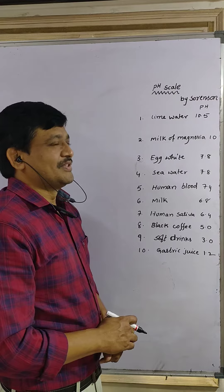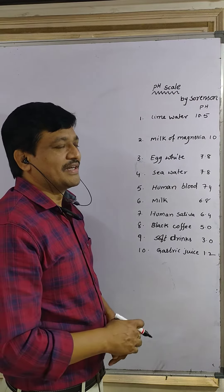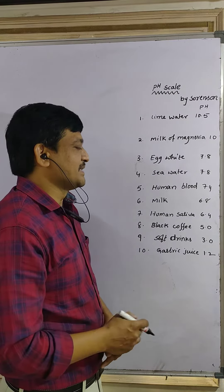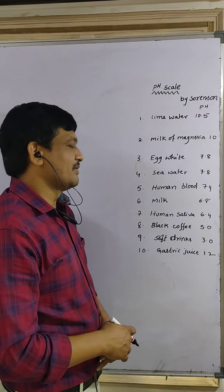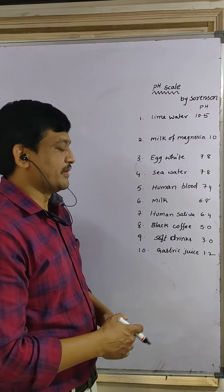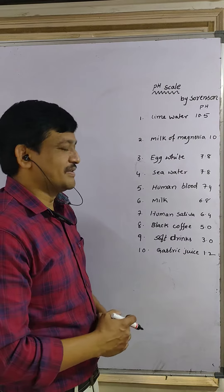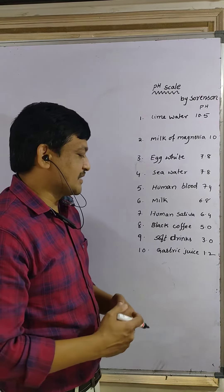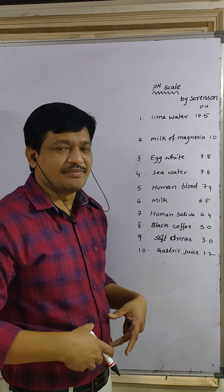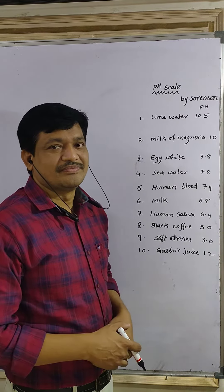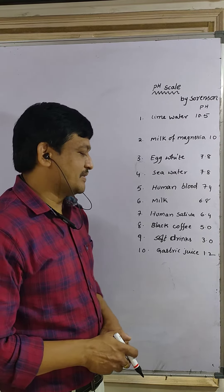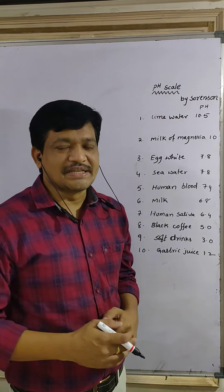Next, milk has a pH of 6.8 — milk contains lactic acid, that is why it is acidic, below 7. Human saliva is 6.4, also acidic in nature. Black coffee is approximately 5.0, soft drinks are 3.0, and gastric juice — which contains HCl present in our stomach — has a pH of 1.2. Below 7 means acidic nature.